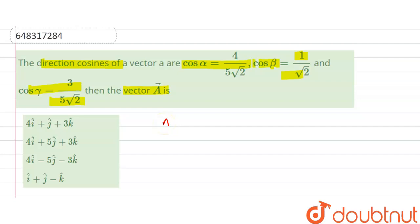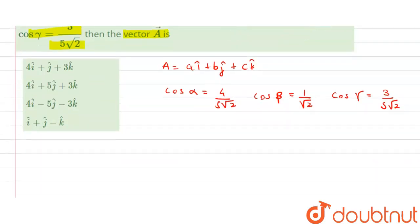We know that vector A = aî + bĵ + ck̂. And cos α is given as 4/(5√2), cos β = 1/√2, and cos γ = 3/(5√2).